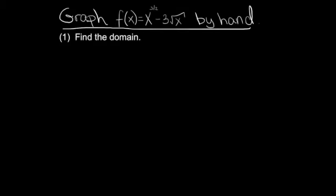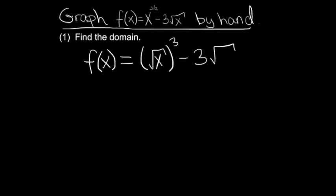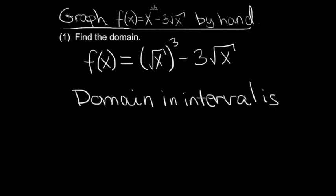The first step is to find the domain of the function. That way when we graph it we'll know exactly which x values are applicable and which ones aren't. Looking at the function, x must be positive, and we should also include x equals 0. So in interval notation the domain goes from 0 to infinity, including 0.